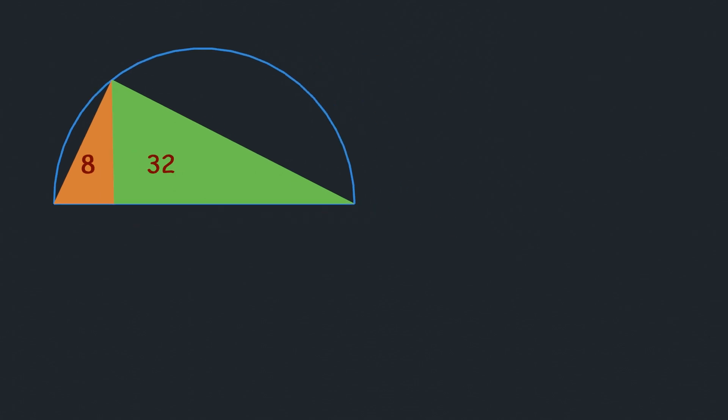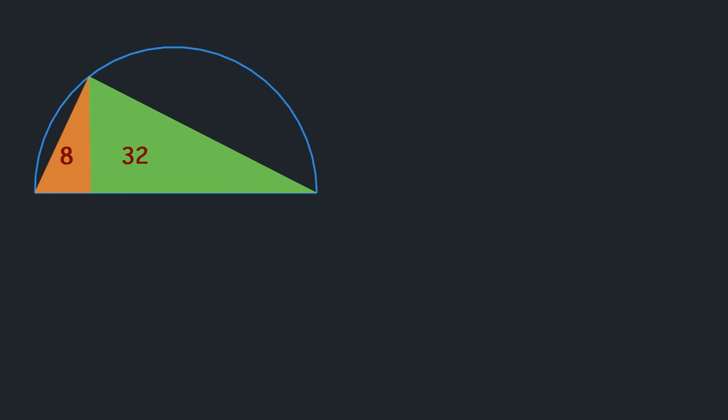Let's name the corners of the triangles first: A, B, C, and D. Then let's name the lengths. Let's call this distance x, this one y, and this one h for height.